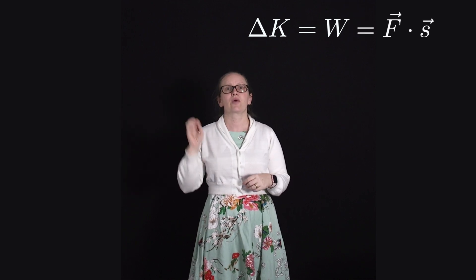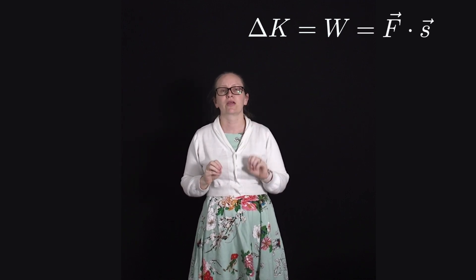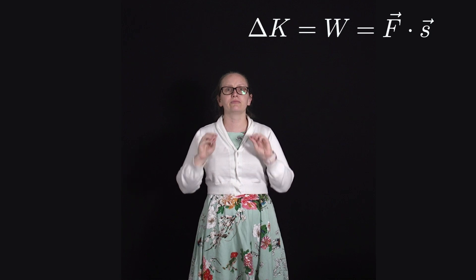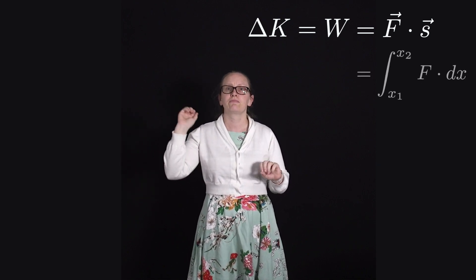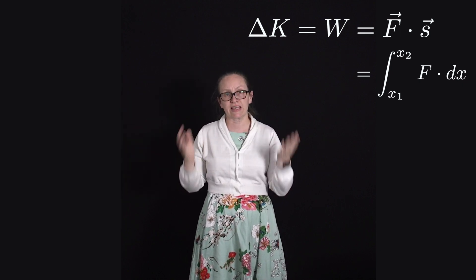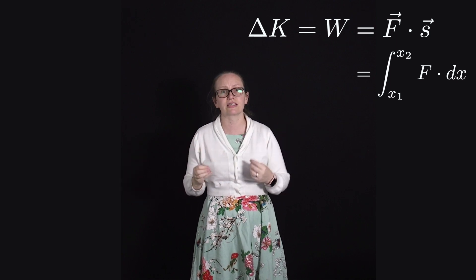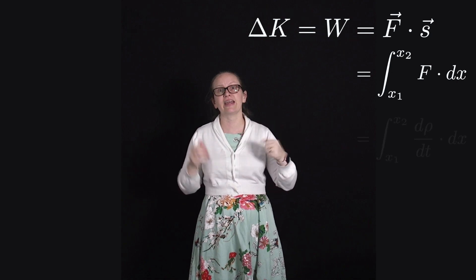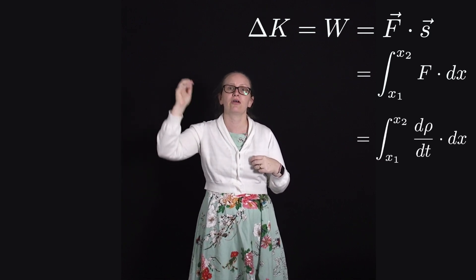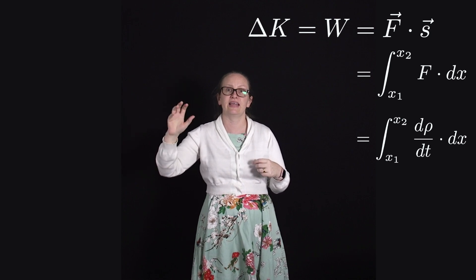As with the non-relativistic case, this work is calculated as f dot s, where s is the displacement and f is the force. So if we consider a particle moving in the x direction from x1 to x2, we can say the work done is equal to the integral from x1 to x2 of f dx. We've seen that the relativistic force is given by dp/dt, so we can write delta k as the integral from x1 to x2 of dp/dt times dx.